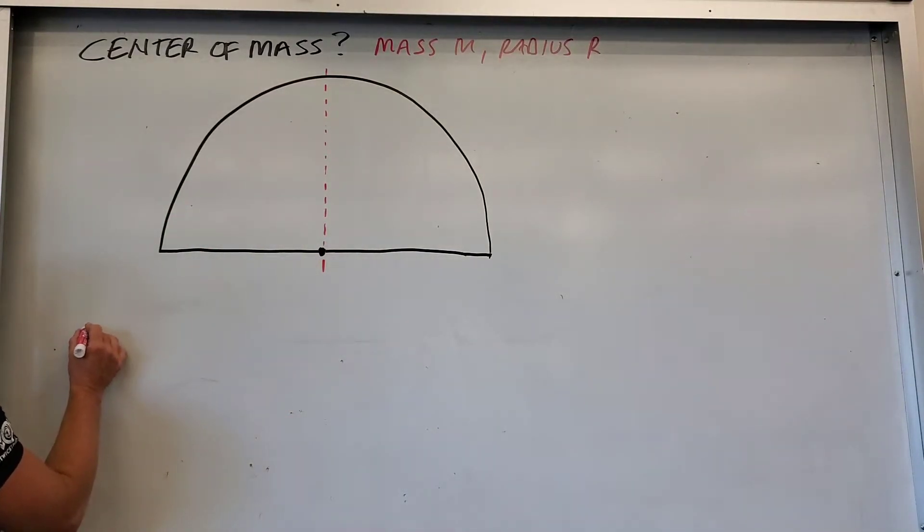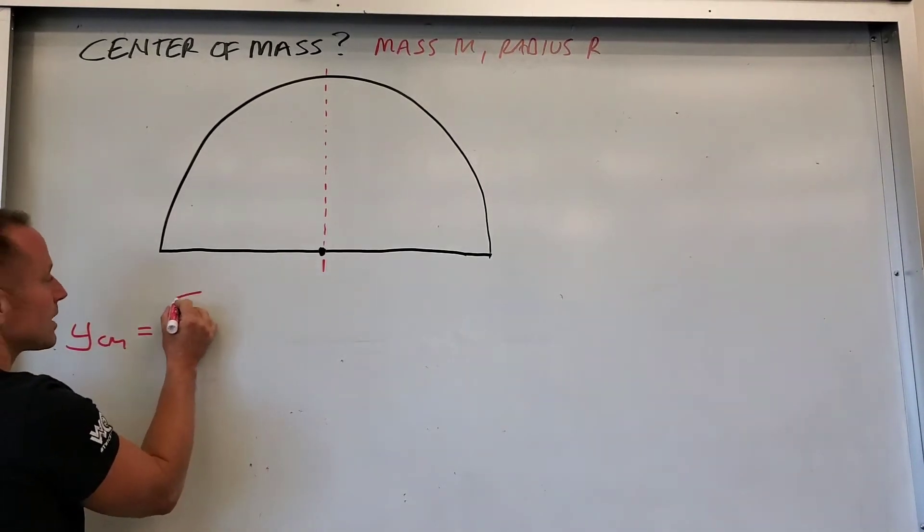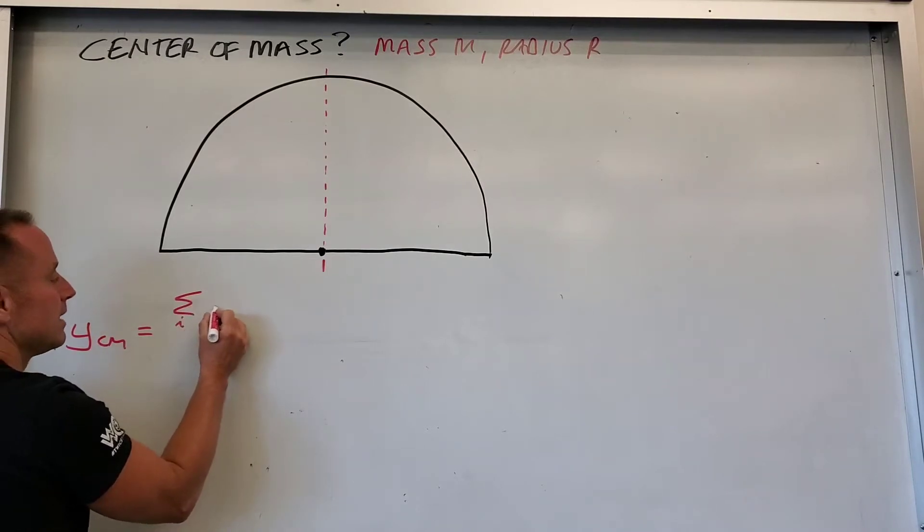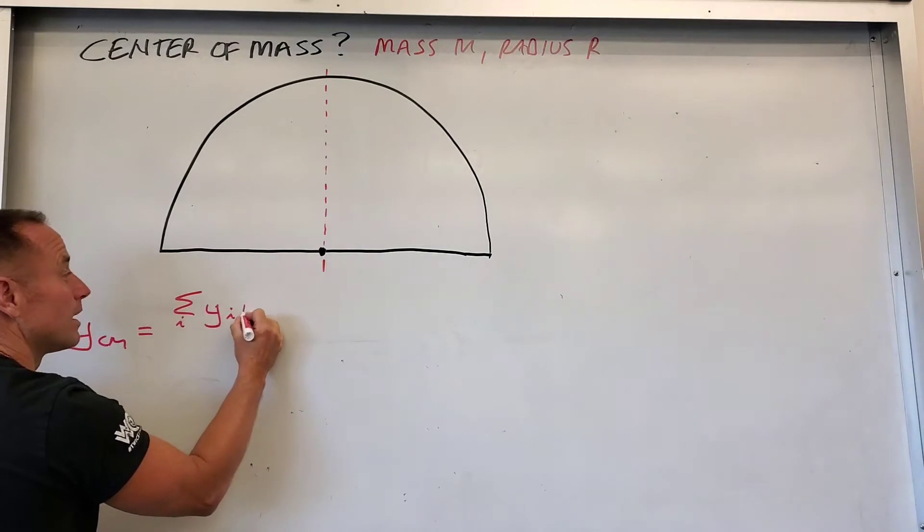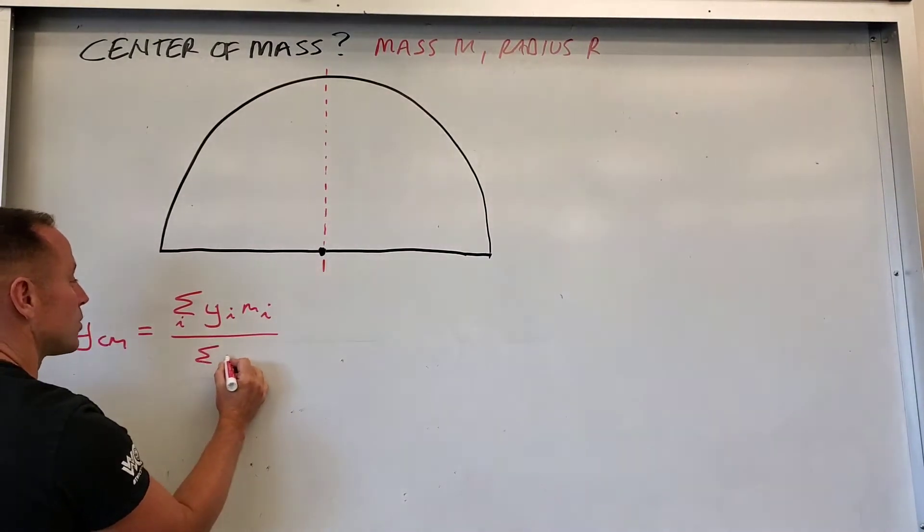Your y-coordinate of a center of mass is what you do if you had a bunch of discrete objects. You would take each object's y coordinate and multiply by how much mass was there, and then divide by the total mass.